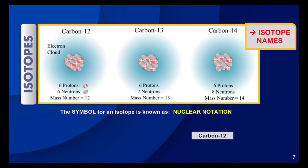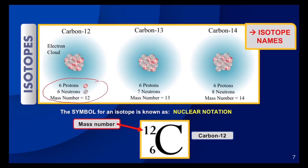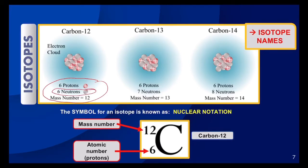Let's take carbon-12 as our example. The symbol for carbon-12 is a capital C with numbers to the left of it. The number at the top is the mass number, and the number at the bottom is the number of protons or the atomic number. To calculate the number of neutrons, all you would need to do is subtract 12 minus 6, so 12 minus 6 protons gives us 6 neutrons. That's how you calculate the number of neutrons given mass number and proton number.